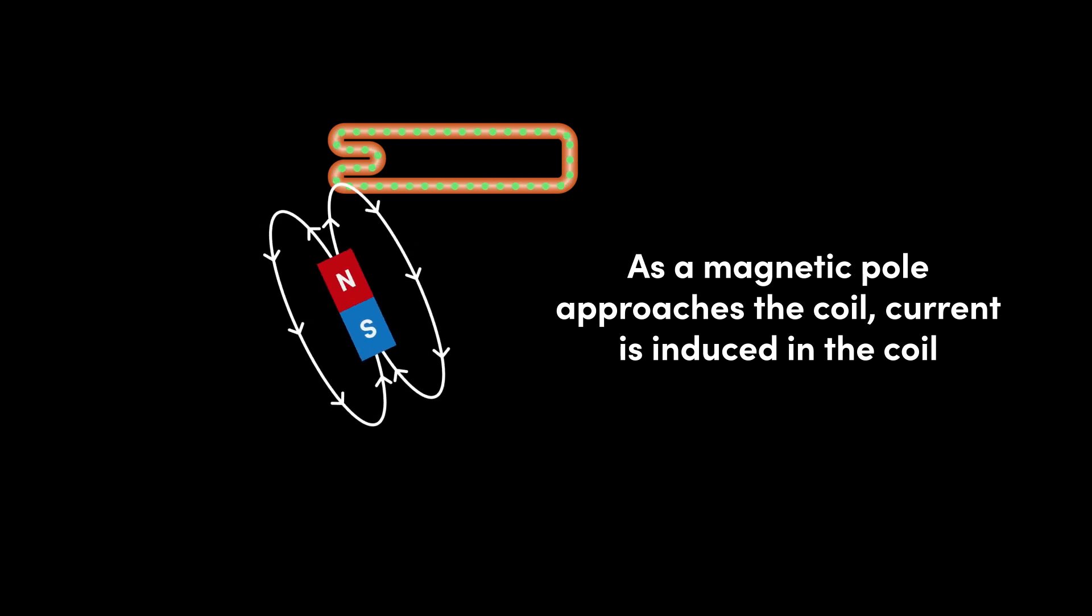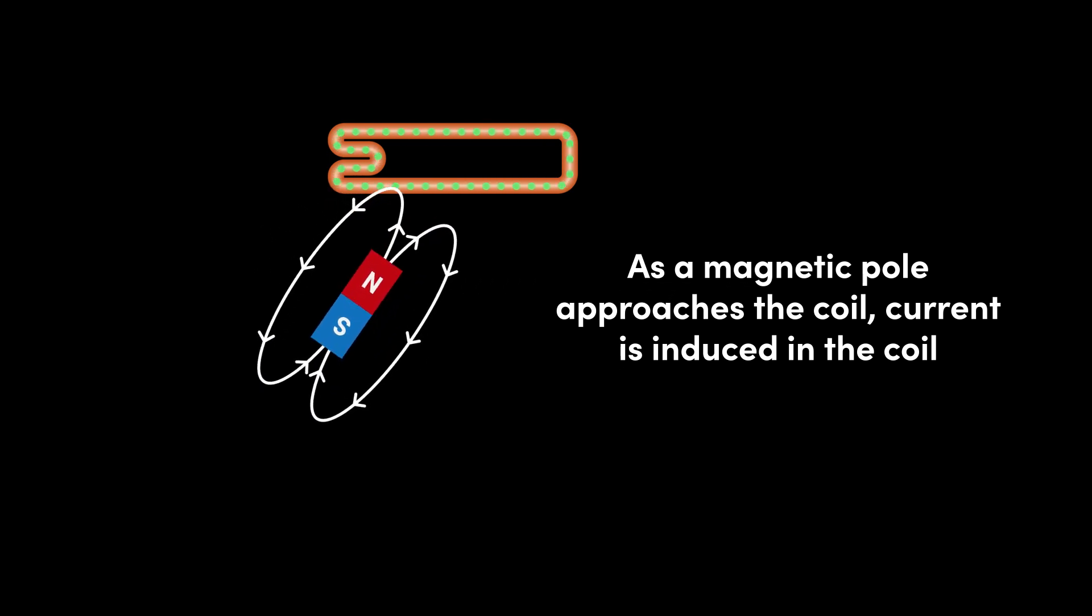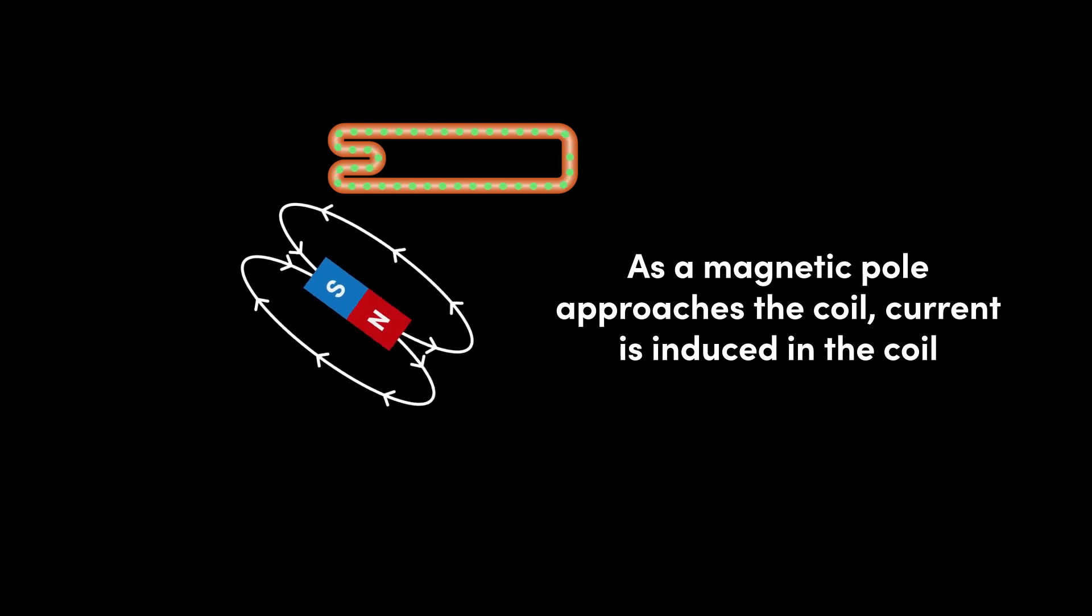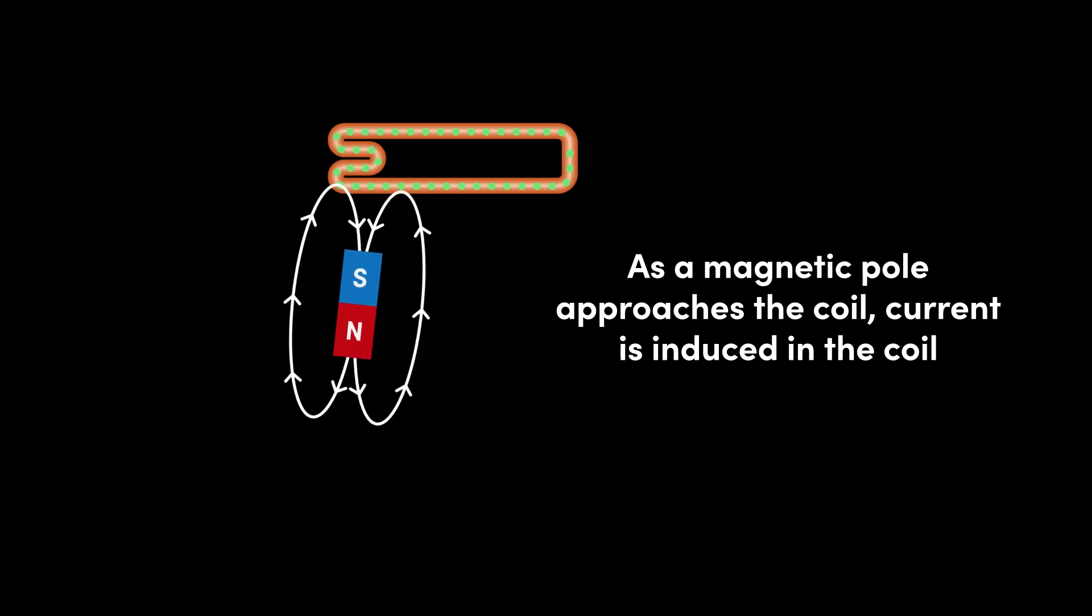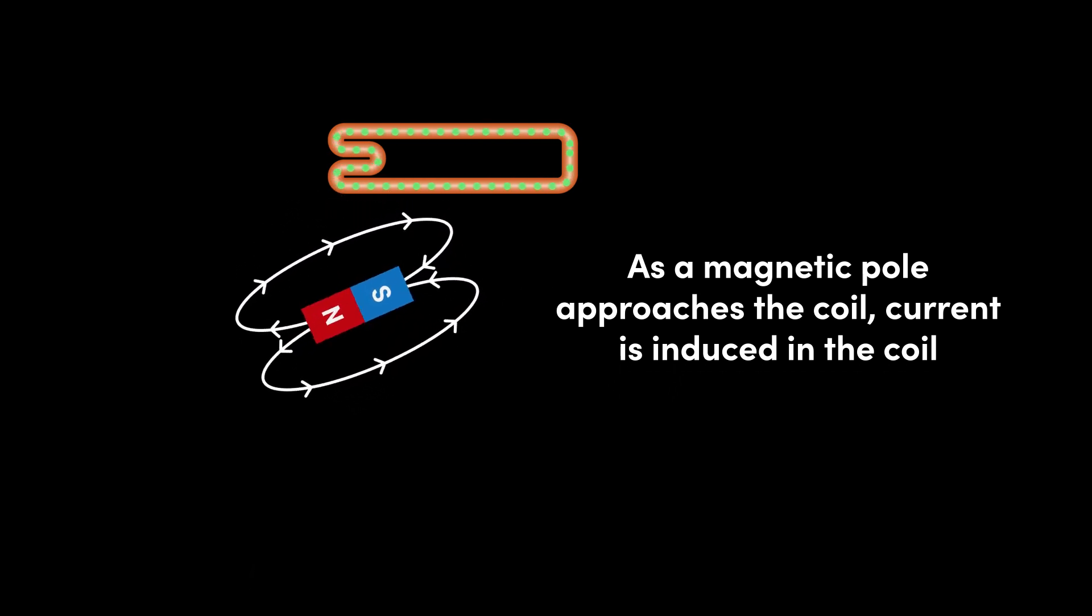As the magnet continues to rotate and the south pole approaches the coil, the increasing strength of the magnetic field induces a current in the coil, with electrons in the coil attracted towards the magnet. Notice how the direction of current has reversed.